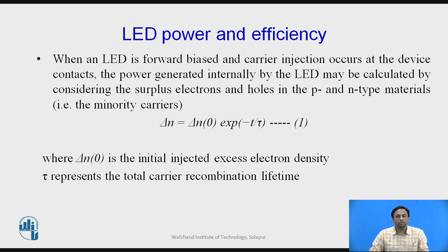When electrons come down from the conduction band to the valence band, we externally insert electrons which are incident on the electrons coming down from E2 to E1 state. This emits energy known as laser generation — that is, stimulated emission.